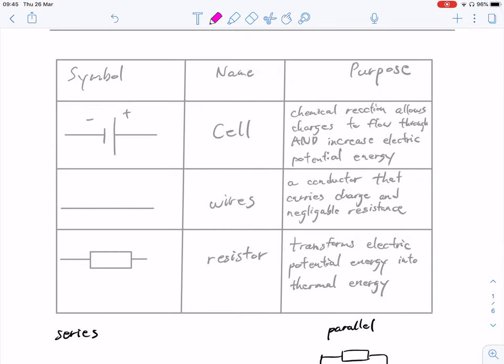So right here, these are probably the three most basic components in a circuit diagram. And so we've got the cell, which is usually a chemical reaction that allows charges to flow through. It also does something really important, which you guys probably know, is it increases the amount of electric potential energy. So once, I like to, well, we'll get into a little bit more detail about cells a little bit later. Okay, but they provide the energy or the electric potential.